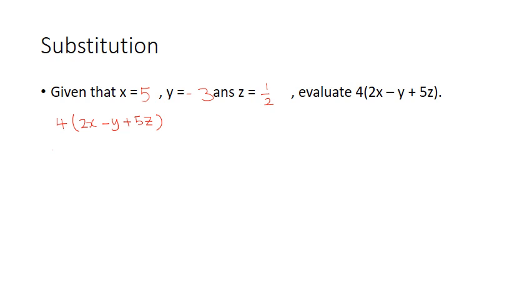So, this is the question. 4 times 2x, so I will get 8x. 4 times minus y, so I will get minus 4y. And lastly, 4 times plus 5z, I will get plus 20z.